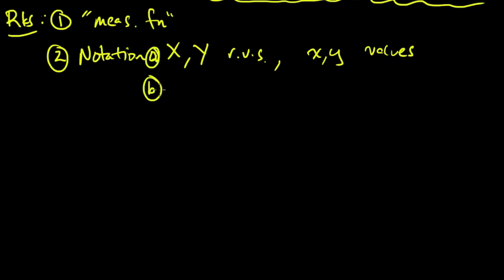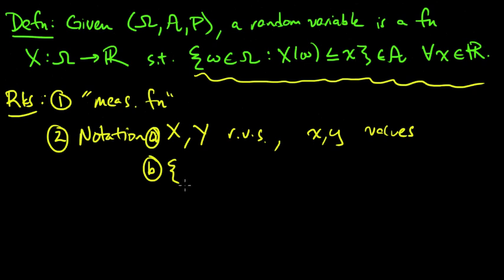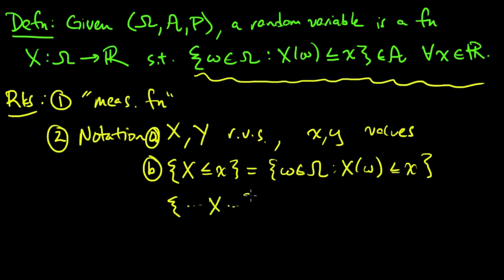Second notational remark is we abbreviate. So we usually abbreviate sets like this. We might abbreviate that set as capital X less or equal to x to mean this same thing here. Or more generally, I might write some condition, something about x, random variable, to mean just the set of omegas for which that same condition is satisfied by x of omega. So this is just a little compact shorthand for the same thing.